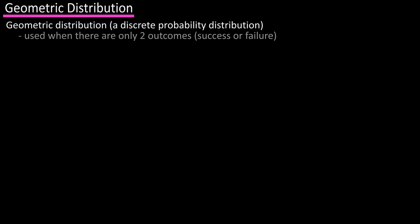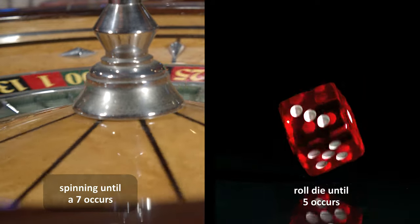The geometric distribution can be used for an experiment that has only two outcomes and is repeated until a successful outcome occurs. For instance,